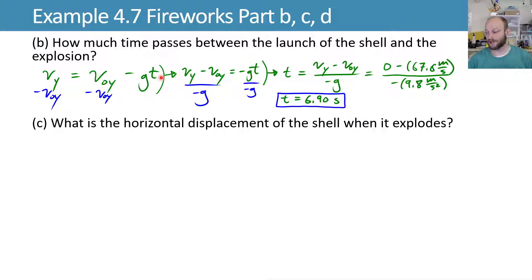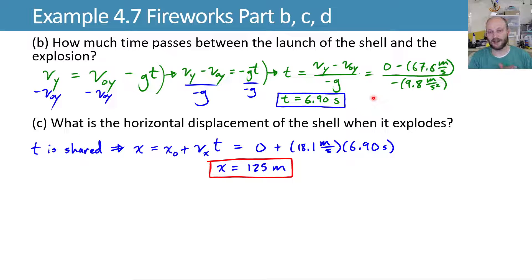How about the horizontal displacement of the shell when it explodes? Well, this is where we need to incorporate that shared time. We know the amount of time that's passed to get to that height, it's 6.9 seconds. And we know that that time is shared with the x-directional motion. So we'll go back to our x equations and say that my x position is equal to my initial x position plus my x velocity times the time. We have values for all of these things, so we'll plug those in, noting that this 6.9 seconds came from the y-directional calculation. We can evaluate that, and we get our x position that we've traveled. By the time that we've reached that final height, we've managed to travel 125 meters in the x-direction.